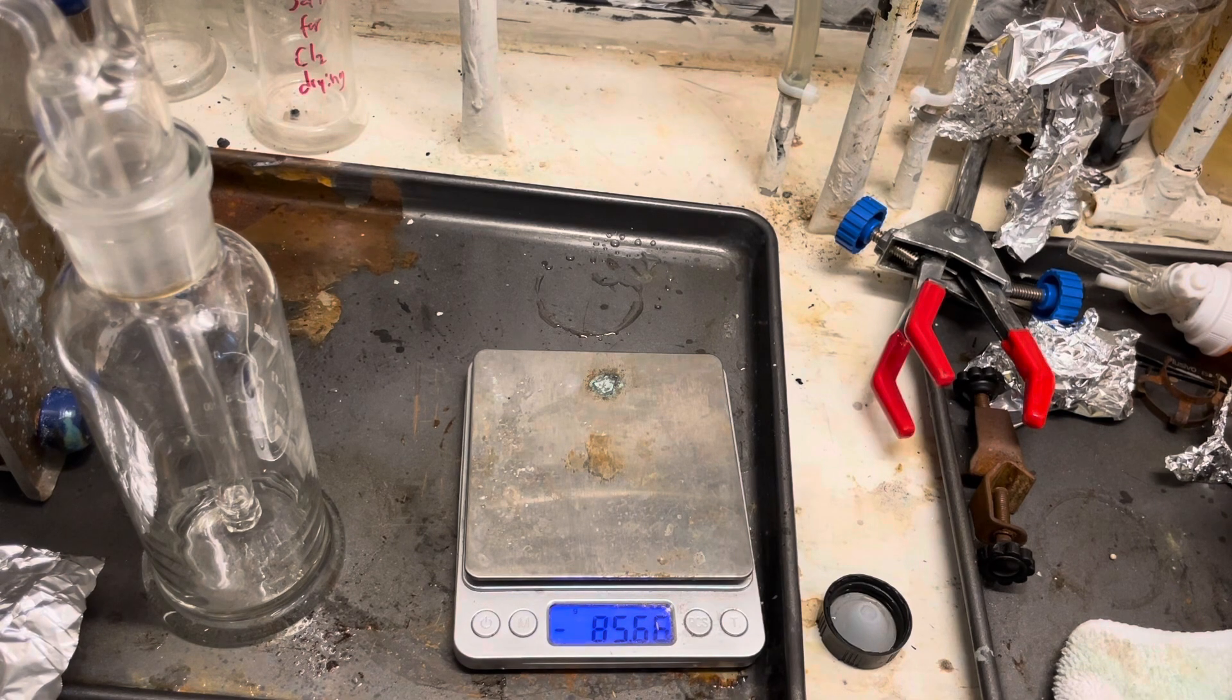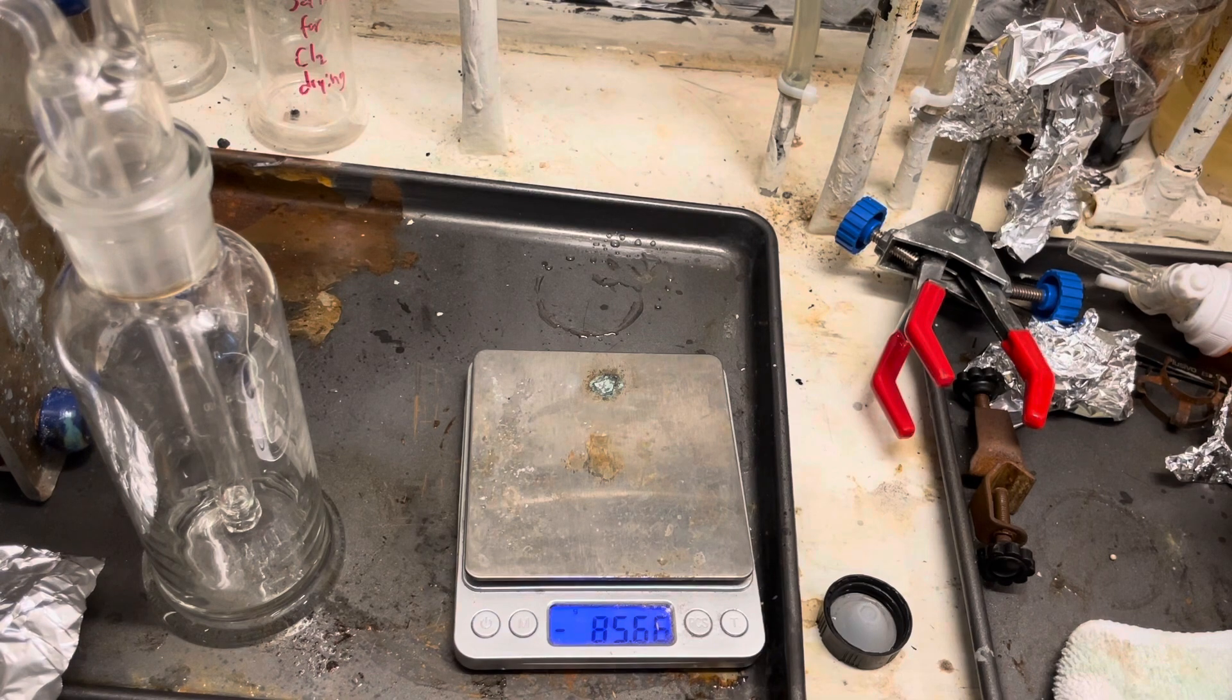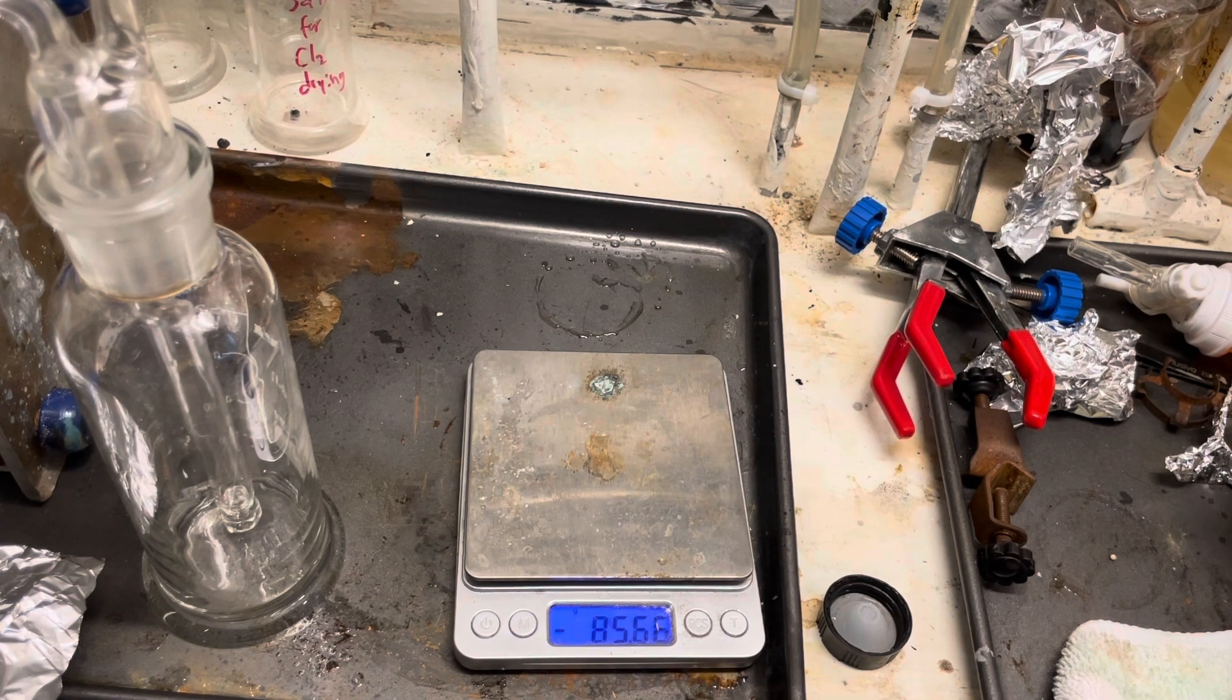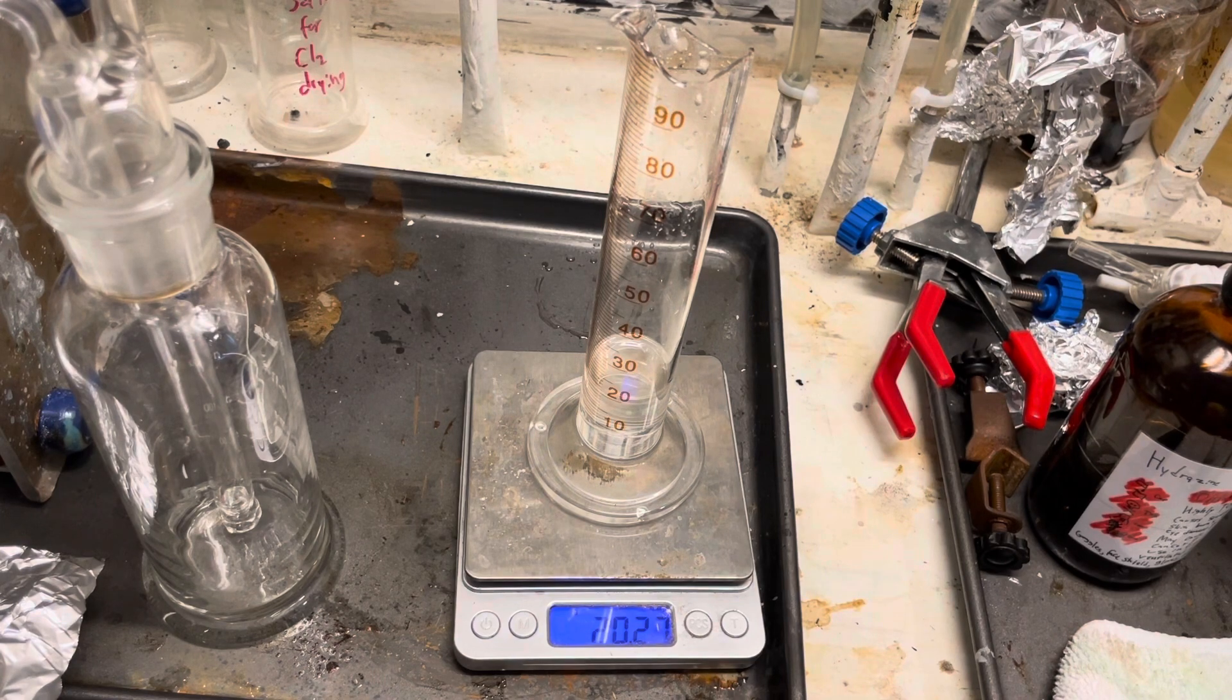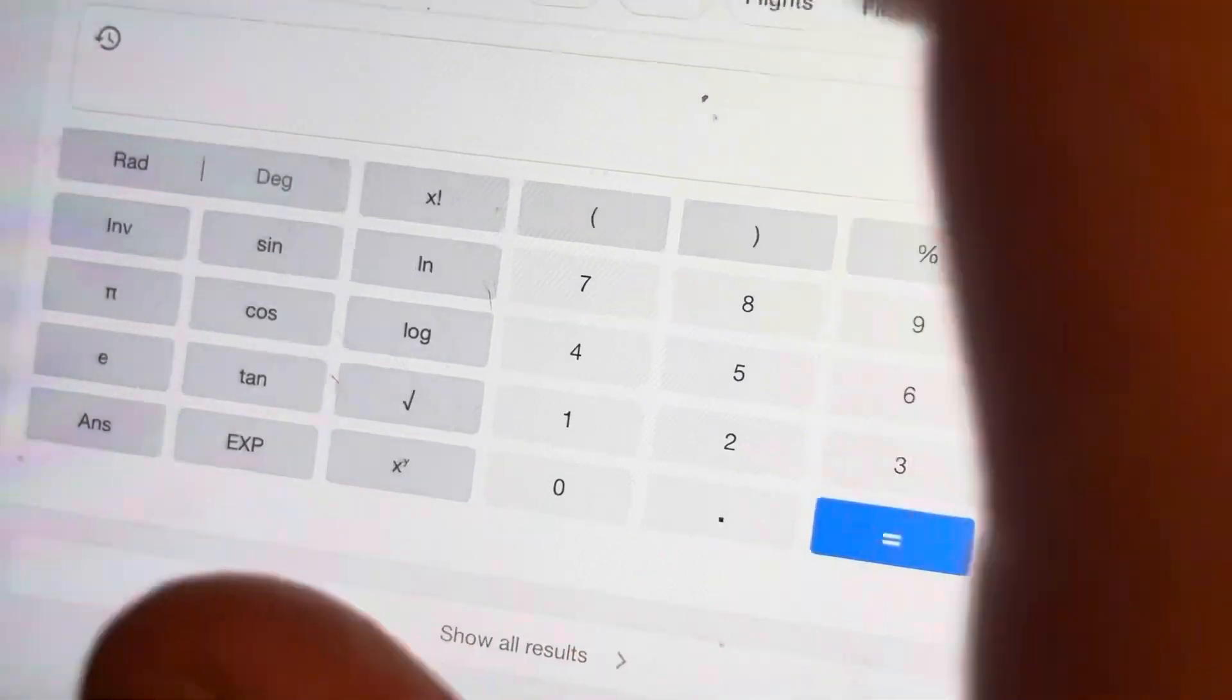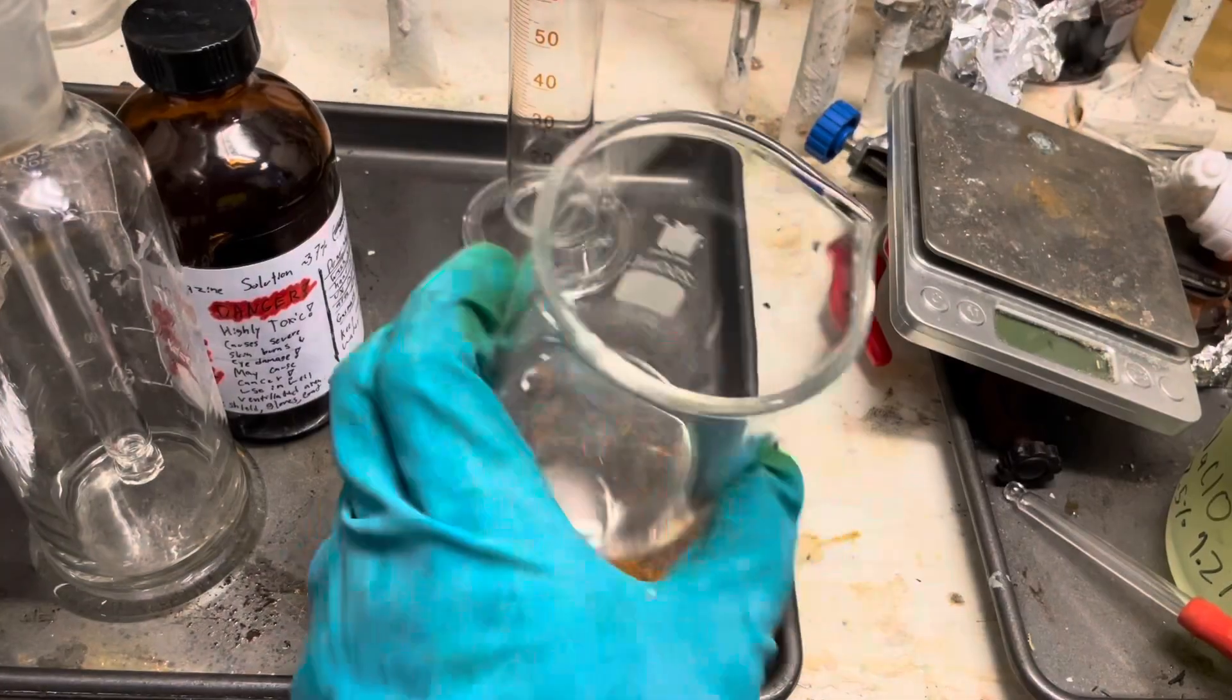I could not find a density chart of aqueous hydrazine online, so all we can do is compare it to a known density. Not exactly great, but oh well. Measured at 20 milliliters, and the density just does not match at all to concentrated hydrazine. So now it's time to titrate it.